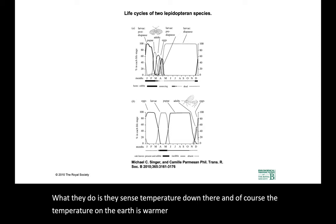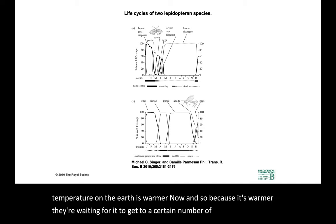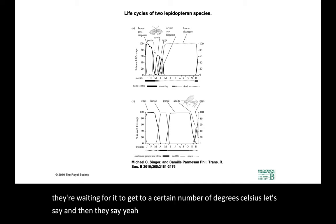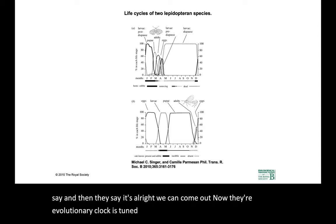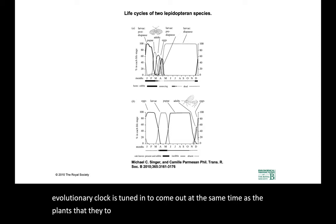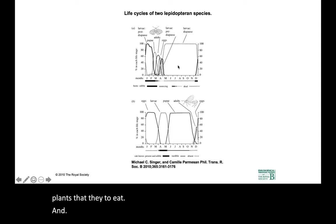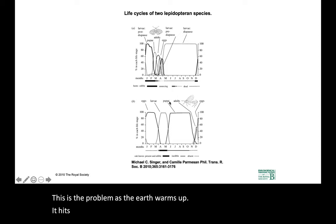Because it's warmer, they are waiting for it to get to a certain number of degrees Celsius — and then they say, yep, it's all right, we can come out now. Their evolutionary clock is tuned to come out at the same time as the plants that they like to eat. As the Earth warms up, it hits that temperature earlier and earlier. So the butterflies come out expecting the buffet, but it turns out that the plants aren't going to be ready for another two weeks.